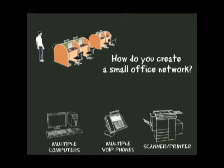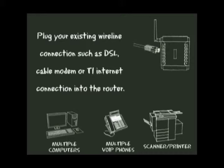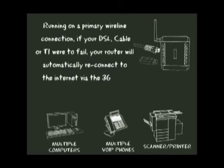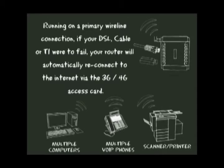How do you create a small office network? Plug your existing wireline connections such as DSL, cable modem, or T1 internet connection to the router. Insert the 3G-4G card into the Nexera router. Turn on the feature called 3G-4G WAN Failover. Running on a primary wireline connection, if your DSL, cable, or T1 were to fail, your router will automatically reconnect to the internet via the 3G-4G access card.